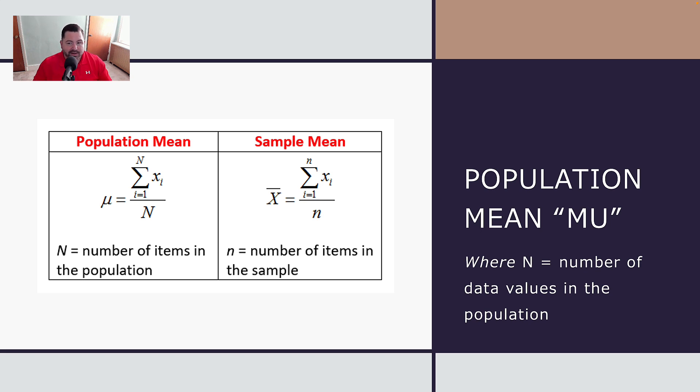So let's talk a little bit now about what's known as the population mean, or what we call the mu in Greek notation. So the capital N represents the total number of people in the population, and the mu is the average or the x bar for the population. And so you see some distinctive differences here.